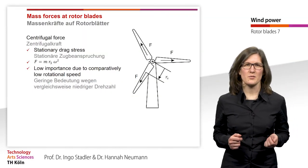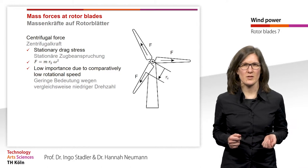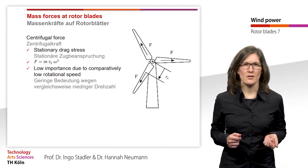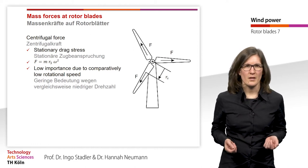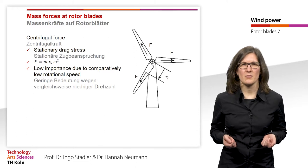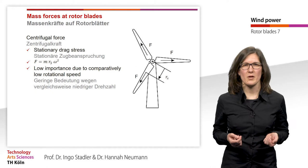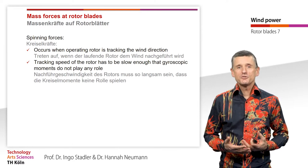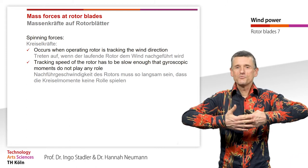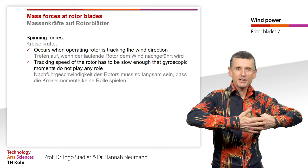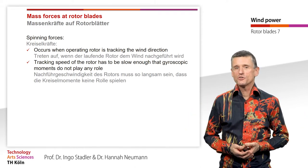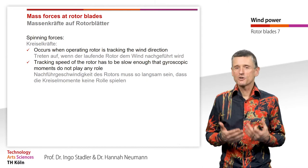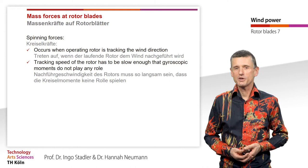A further mass force is the centrifugal force, which leads to a stationary drag stress. It is calculated by the mass of the rotor blade times the radius to the mass center times the angular velocity squared. Compared to the self-weight force, this has lower importance due to the comparatively low rotational speed. The next forces are the spinning forces, which occur when the rotating rotor moves towards a new wind direction. The tracking speed of the rotor must be as slow as possible so that gyroscopic moments remain low and do not play a significant role in rotor blade dimensioning.